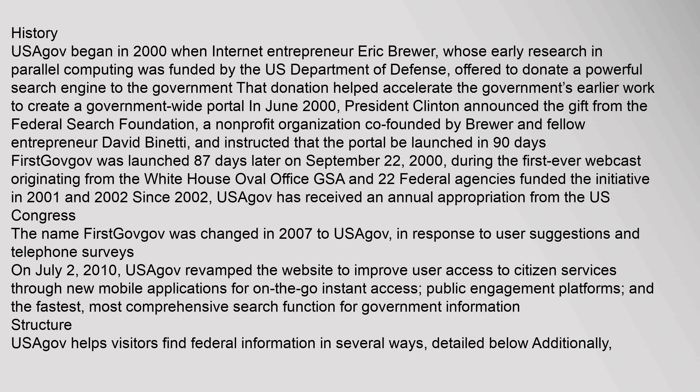In response to user suggestions and telephone surveys, on July 2, 2010, USAGov revamped the website to improve user access to citizen services through new mobile applications for on-the-go instant access, public engagement platforms, and the fastest, most comprehensive search function for government information. Structure: USAGov helps visitors find federal information in several ways, detailed below.